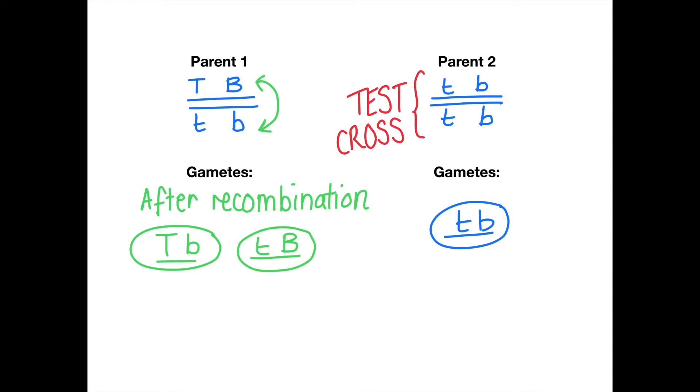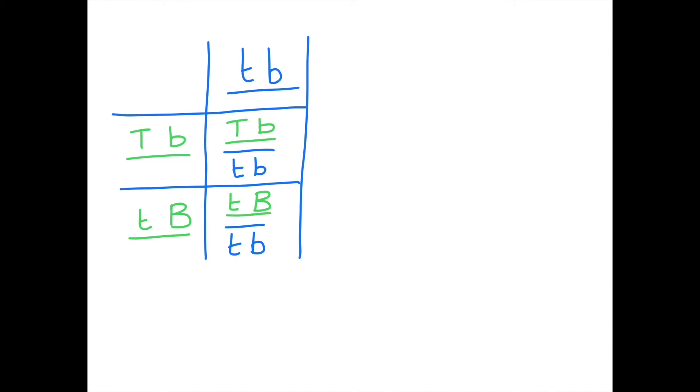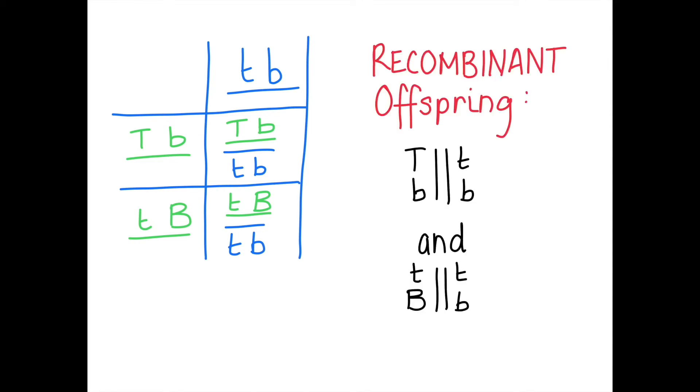On the right-hand side, parent two only has one option. Even if you assumed recombination to occur, it's still only one option for what the gametes could be. Once we put these into a Punnett square, and notice that I am using the gametes formed after recombination by parent one, then the recombinant offspring could have been as follows. Notice that I am representing them in the same notation that the IB would have represented them.